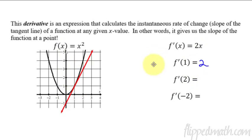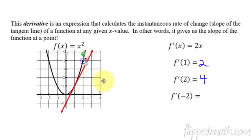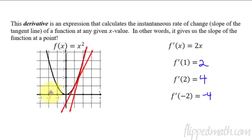Notice that line right there has a slope of 2. If we plug a 2 into the derivative, 2 times 2 is 4. So at x = 2, the tangent line at that point has a slope of 4. And then the last one: 2 times negative 2 is negative 4. If we go over to x = negative 2, you have a tangent line with a slope of negative 4.